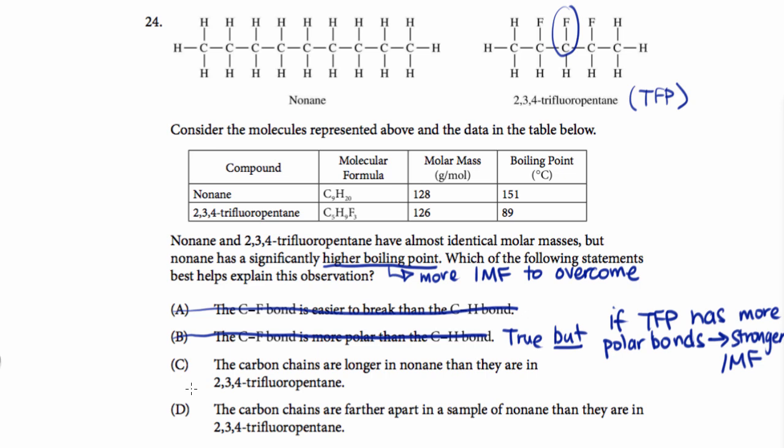So choice C says the carbon chains are longer in nonane than they are in 2,3,4-trifluoropentane. So if we just look at the pictures here of the structures, this is also true.